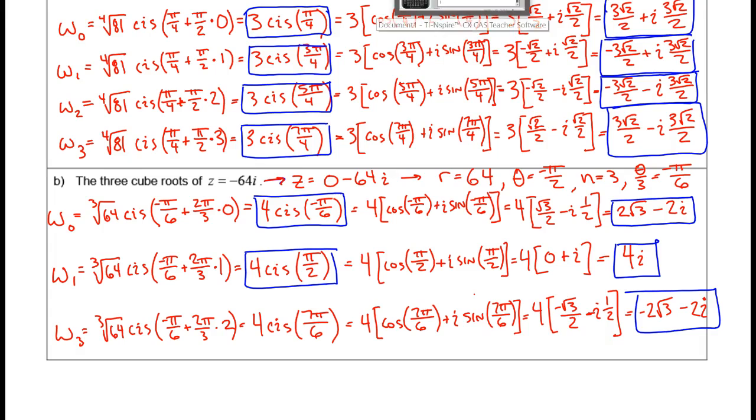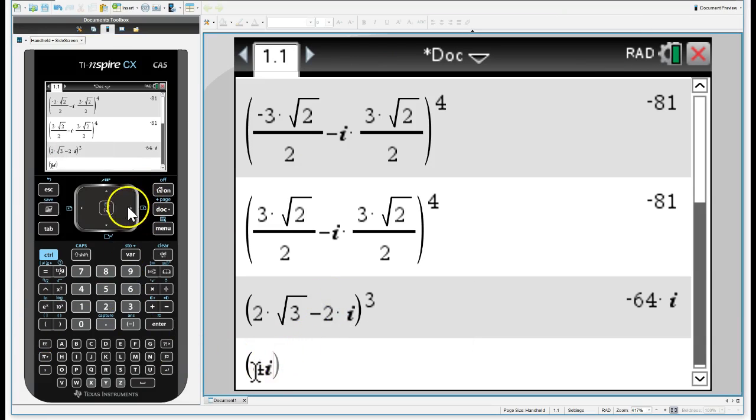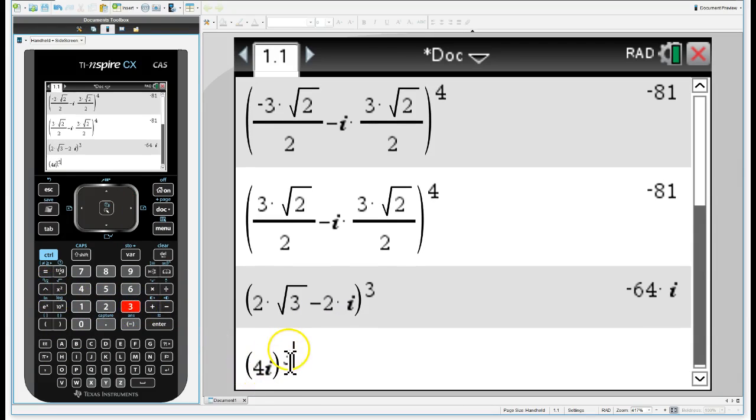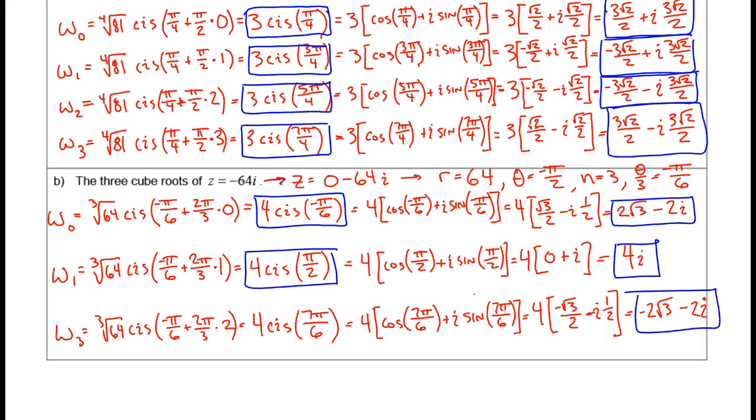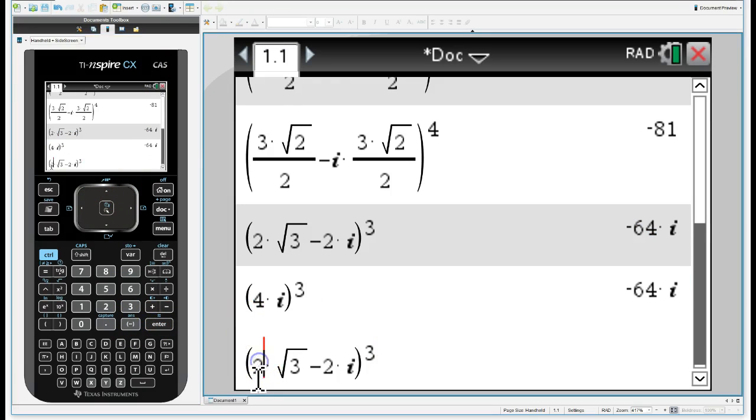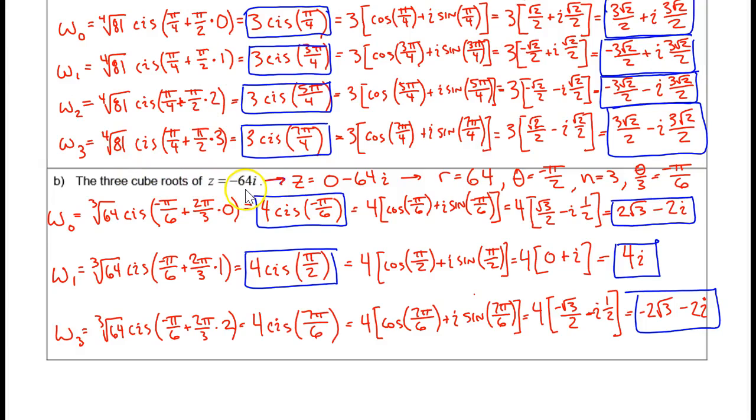Let's try 4i now and see what happens with that. So I'm going to take 4i and raise it to the third power. Now, folks, you should be able to figure this one out. Because 4 cubed is 64. i cubed is i squared times i, where i squared is negative 1. So that would give me 64 times negative 1 times i, also known as negative 64i. All right, one last one here to check. We have negative 2 root 3 minus 2i. That's the same as this guy up here, except that first term there is negative. The real component is negative. And there we have it. Again, we've shown that all three of those are cube roots of the complex number negative 64i.